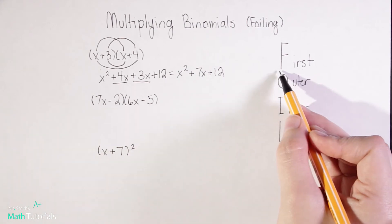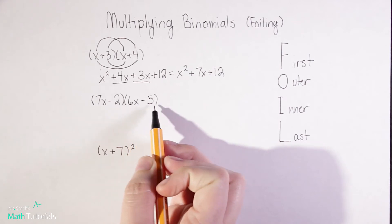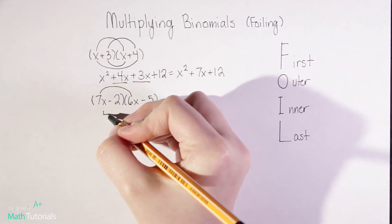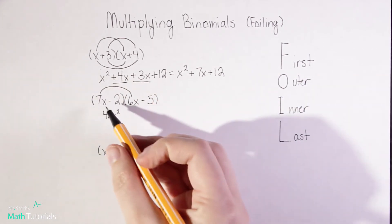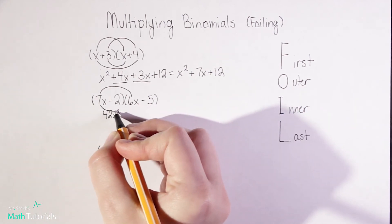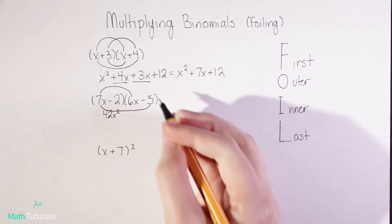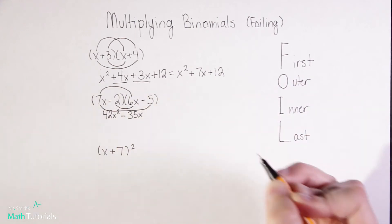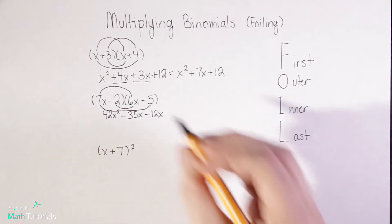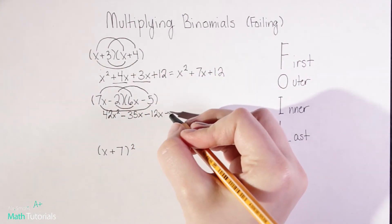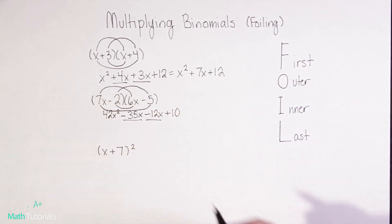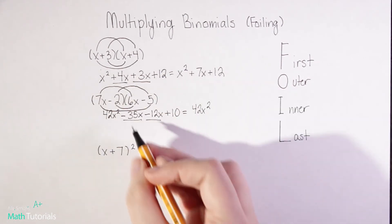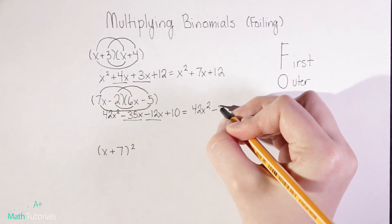Let's look at the next example. We recognize this is a binomial being multiplied by a binomial. We start by multiplying our first two numbers, 7x and 6x — 7 times 6 is 42x squared. Now we do the Outer: 7x times negative 5, which gives negative 35x. Now the Inner: negative 2 times 6x would be negative 12x. And now the Last: negative 2 times negative 5 would be positive 10. So again, I've got those two center terms to combine — negative 35x minus 12x ends up being negative 47x.